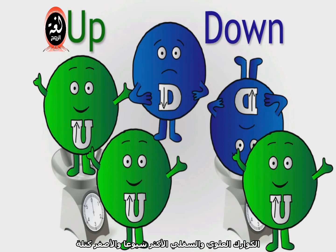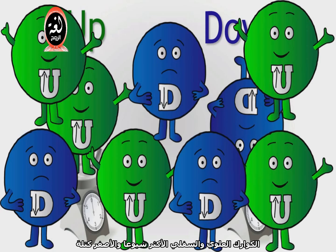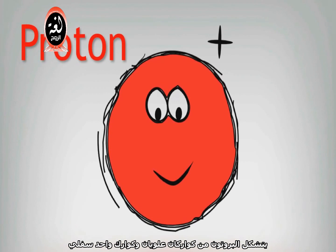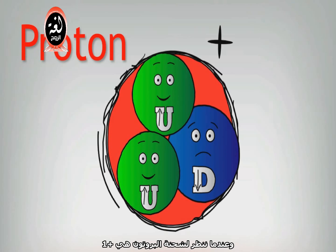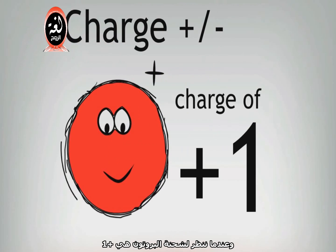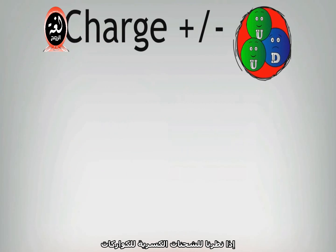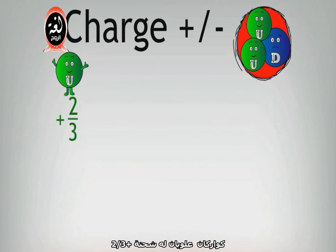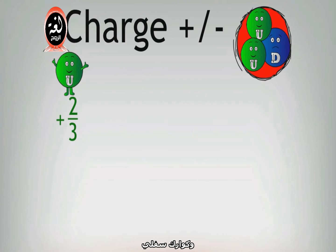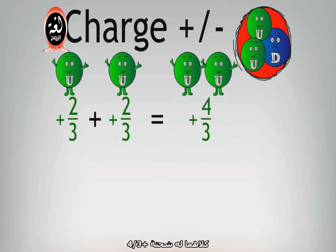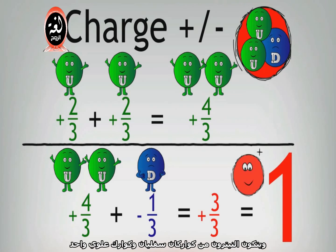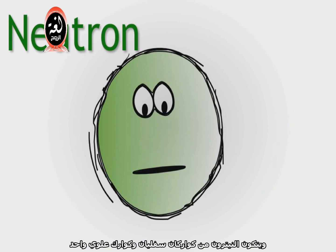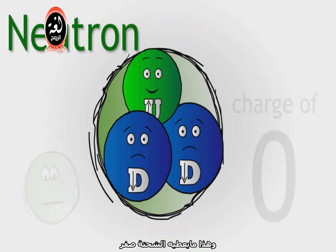The Up and Down Quarks are the most common and least massive. The Proton was found to be made of two Up Quarks and one Down Quark. Since one Up Quark has a charge of plus two-thirds, two Up Quarks give a combined charge of plus four-thirds. Adding a Down Quark reduces this to three-thirds, equivalent to one. A Neutron consists of two Down Quarks and one Up Quark, giving it an overall charge of zero.